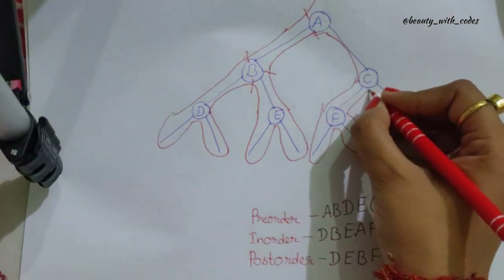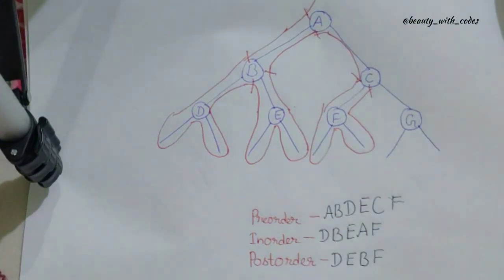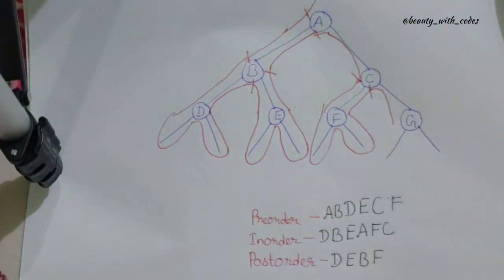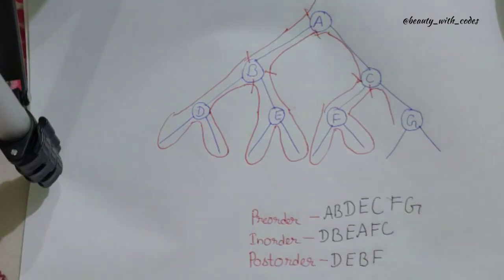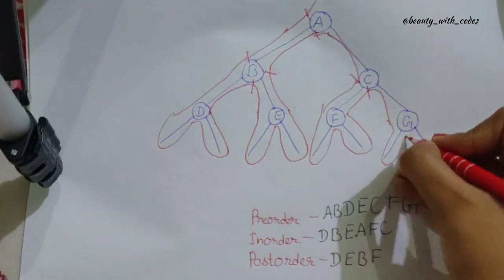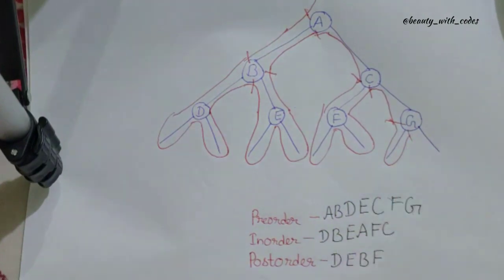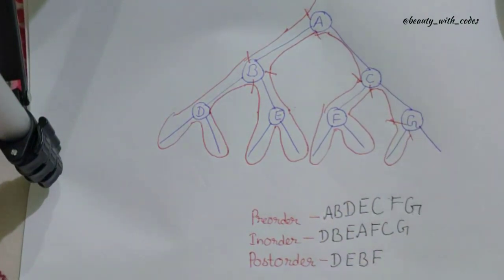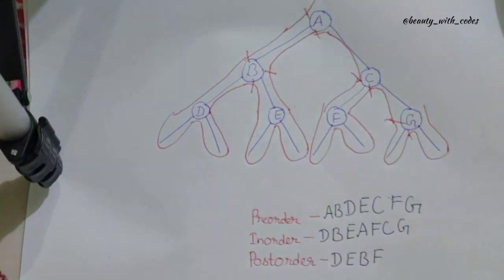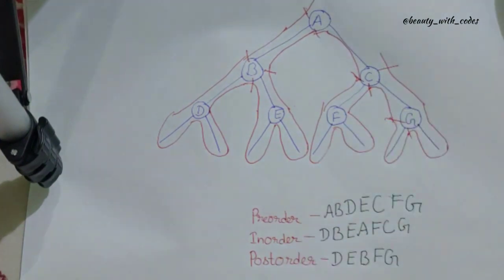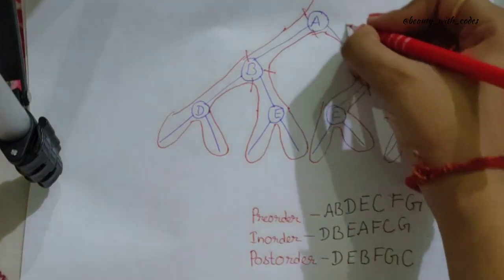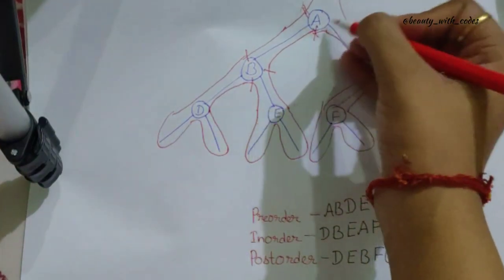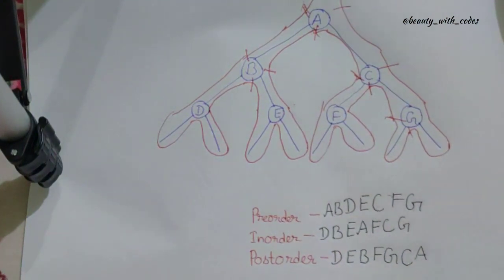C is visited for the second time — printed in in-order. Then G is visited for the first time — printed in pre-order. G is visited for the second time — printed in in-order. G is visited for the third time — printed in post-order. C is visited for the third time — printed in post-order. Finally, A is visited for the third time — printed in post-order. By the end of the traversal we have our pre-order, in-order, and post-order. You can apply this to any binary tree.